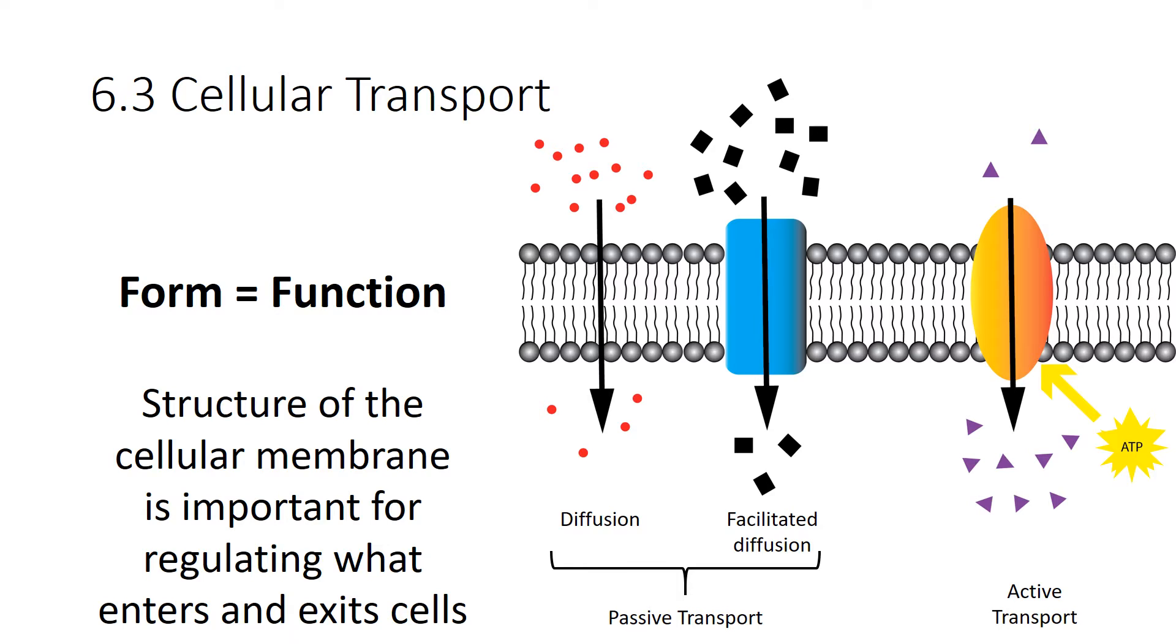And they can pass through through either passive transport, which includes diffusion and facilitated diffusion, or active transport. Let's take a closer look.